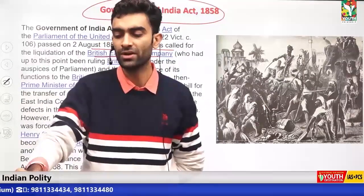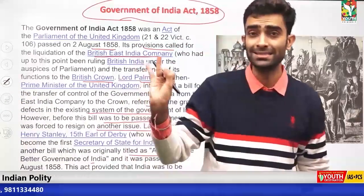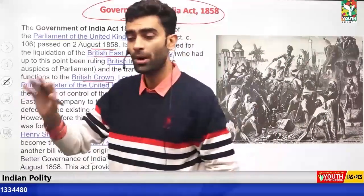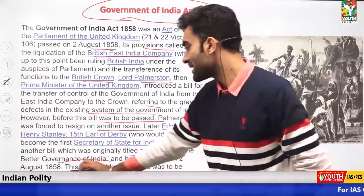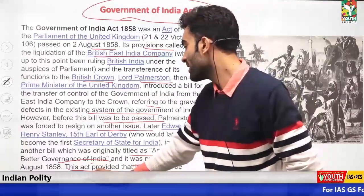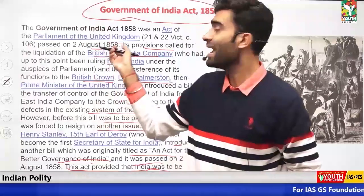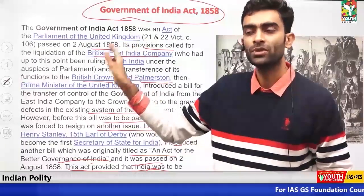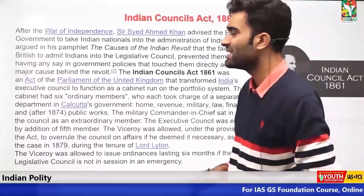Good governance means including all in the society — minorities, OBC, disabled people, all should be included. This is part of good governance. The Act for the Better Governance of India provided that India was to be governed directly and in the name of the Crown, through this Government of India Act 1858.